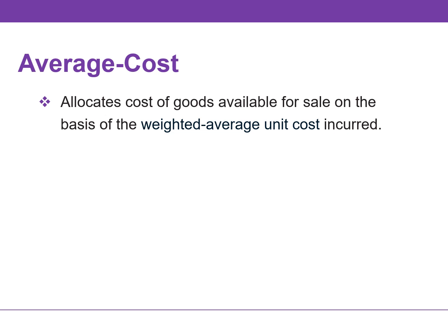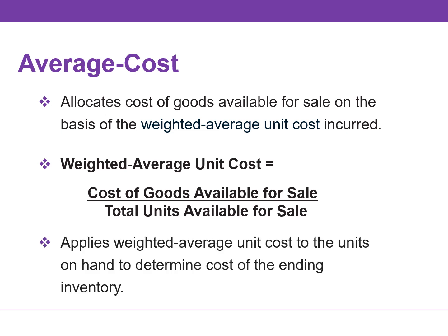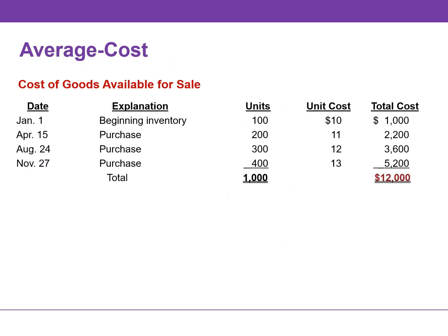The average cost method allocates the cost of goods available for sale on the basis of the weighted average unit cost incurred. The weighted average unit cost is calculated by dividing the cost of goods available for sale by the total units available for sale. The company then applies that weighted average unit cost to the units on hand to determine the cost of ending inventory.